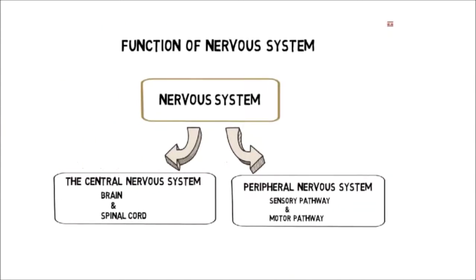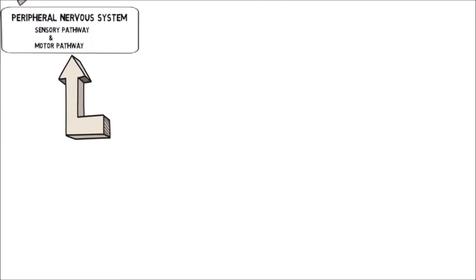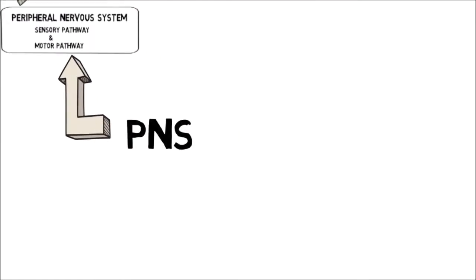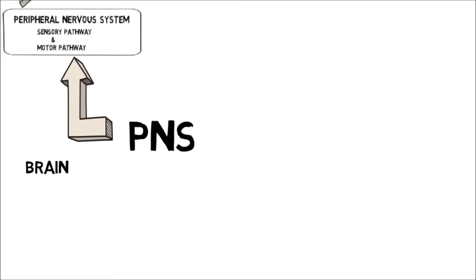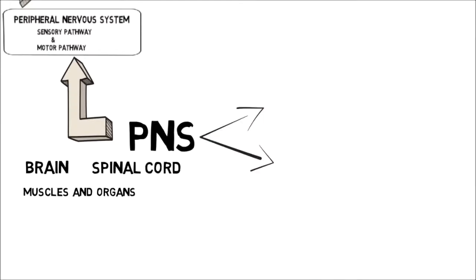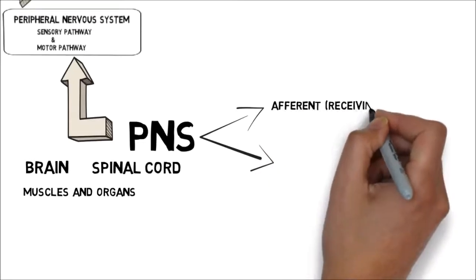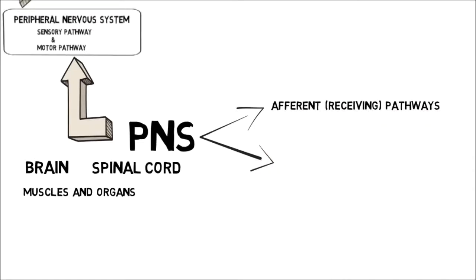Now, let us go to our second important topic, that is the peripheral nervous system. The peripheral nervous system consists of all nerves arising from the brain and the spinal cord. Overall, it consists of two kinds of pathways: the afferent and the efferent. The first, that is the afferent, also known as receiving pathway, includes two kinds of nerves.